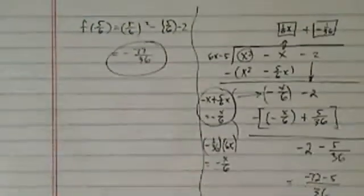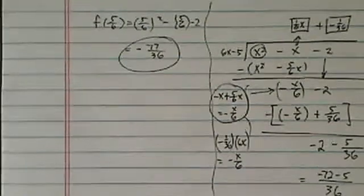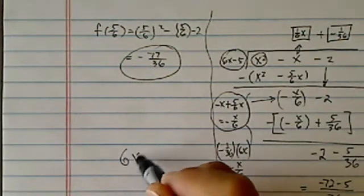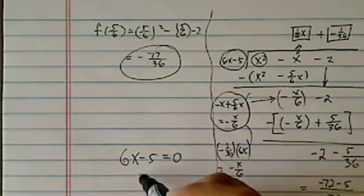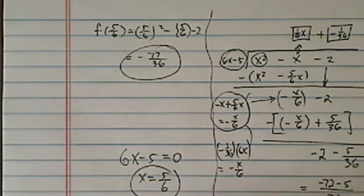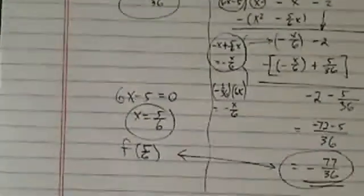So by now I hope you're convinced that whenever you want to find a remainder, all you have to do is whatever this thing you're trying to divide, set it equal to 0, so you can find x equal to 5 over 6, and then evaluate at this point to find the remainder. Instead of doing this big, long, ugly, long division.